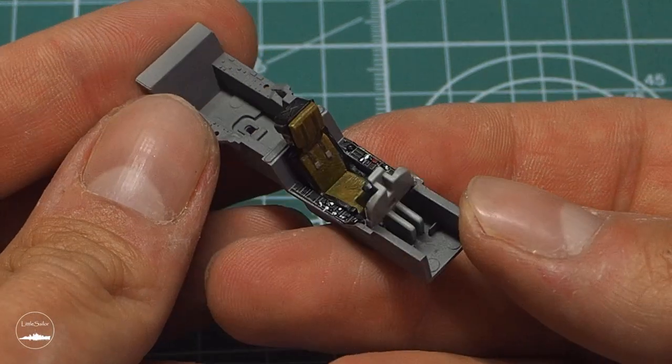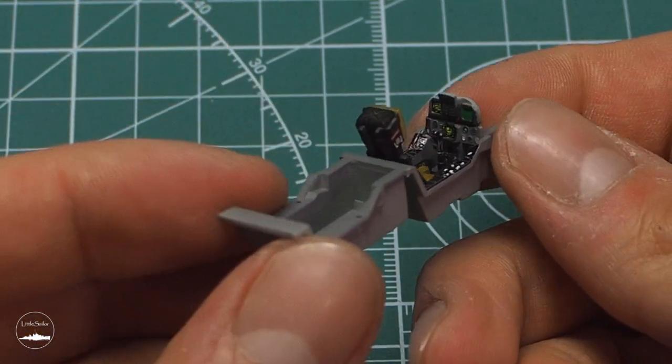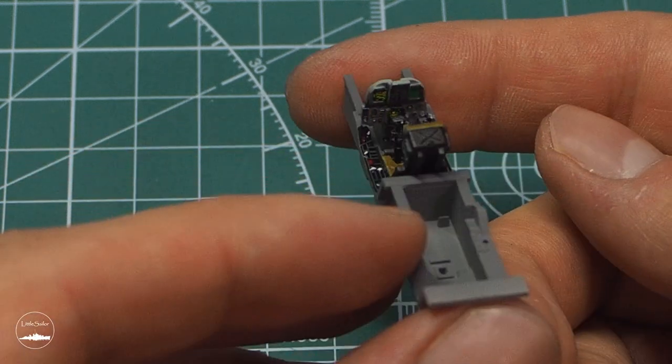This is how the cockpit looks after the varnish dries. I have to admit that as for the first plane cockpit I made, I'm quite happy.